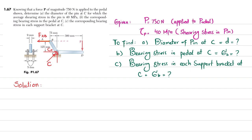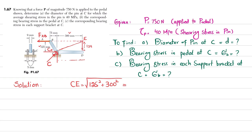To find this resultant, if I draw a dotted line, this distance is 125 mm and this distance is 300 mm, and this height is 125 mm. By using the Pythagorean theorem, this distance — let this point be E — so CE equals √(125² + 300²), which equals 325 millimeters.